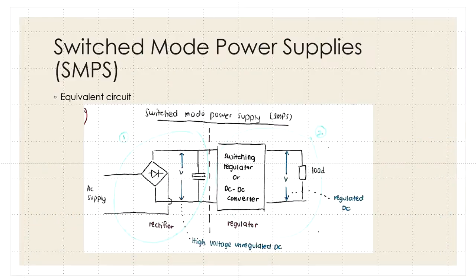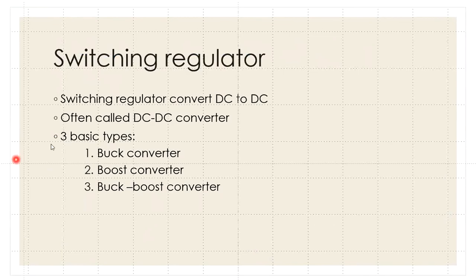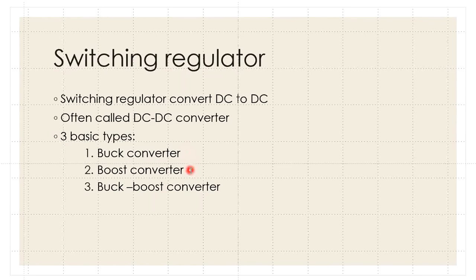The DC-DC converter, also called a switching regulator, converts DC voltage to another DC voltage. There are three basic types of DC-DC converter we will go through in chapter four: the buck converter, the boost converter, and the buck-boost converter. The buck converter is a step-down converter — it reduces the DC voltage. The boost converter steps up the DC voltage. The buck-boost converter, as the name suggests, is a combination of both and can step up or step down using the same circuit configuration.